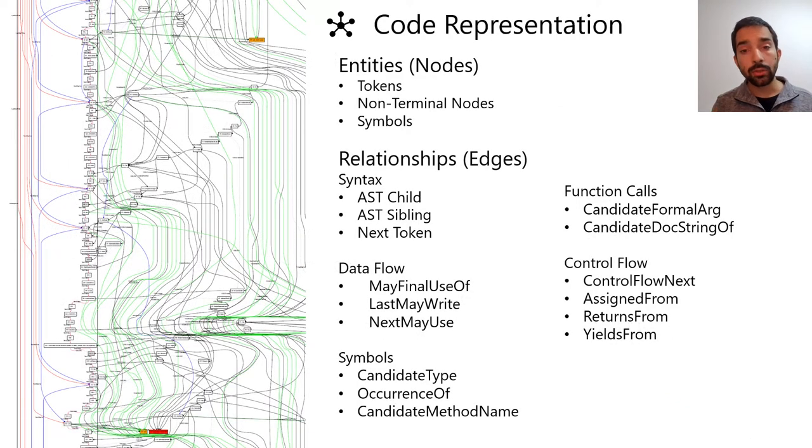The next question is how to represent source code. Simplistic representations of code that are represented as a sequence of tokens are not suitable here, and have been shown to underperform. Instead, we want to exploit the rich unknown structure of the code.